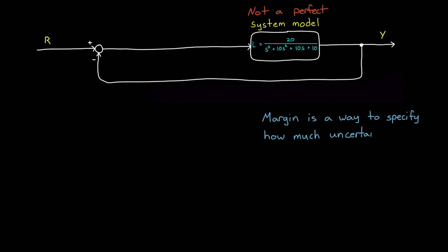Therefore we want to make sure there's margin in the design. Margin is a way to specify how much uncertainty your system can handle before it no longer meets the requirement. And specifying margin in terms of gain and phase, like gain margin must be greater than 3 and phase margin must be greater than 30 degrees, means that your real system will still be stable even if its gain is 3 times higher than the model at the critical frequency, or if its phase differs from the model by 30 degrees at the critical frequency.